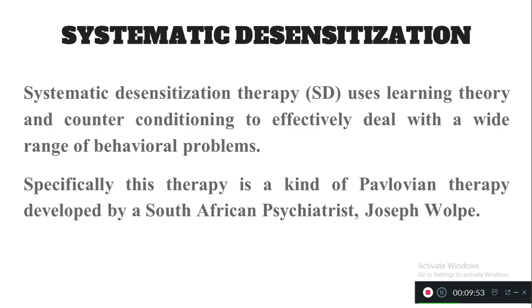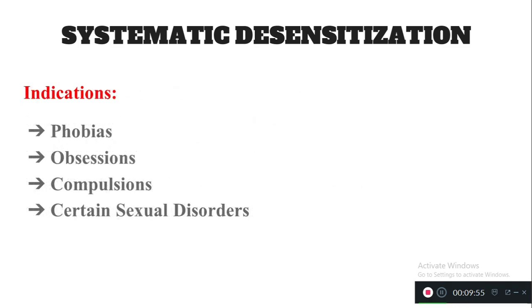Now let's see the indications for systematic desensitization. This therapy is very effective for conditions like phobia, obsession, compulsion, and some kinds of sexual disorders. In these four conditions, we go for systematic desensitization therapy.